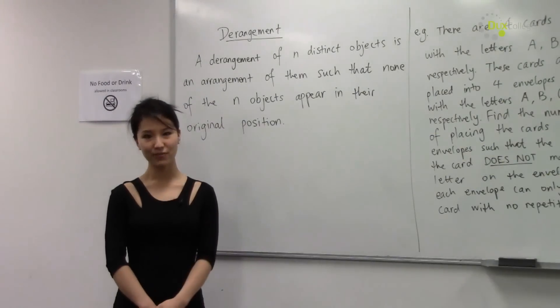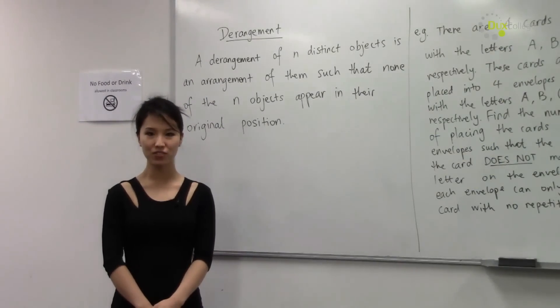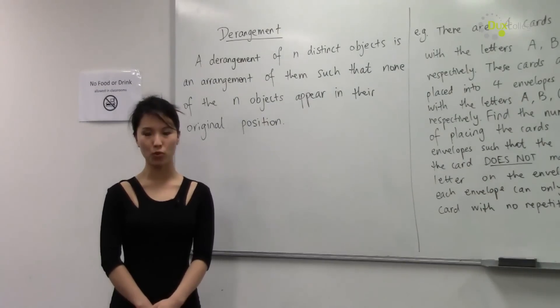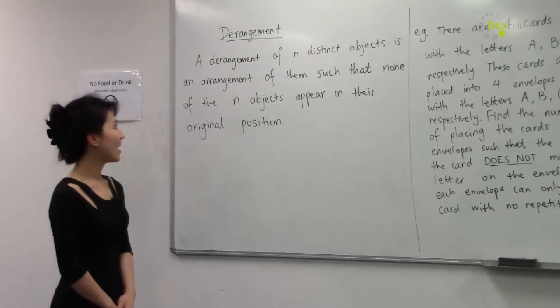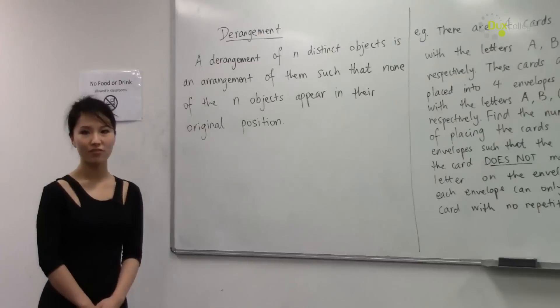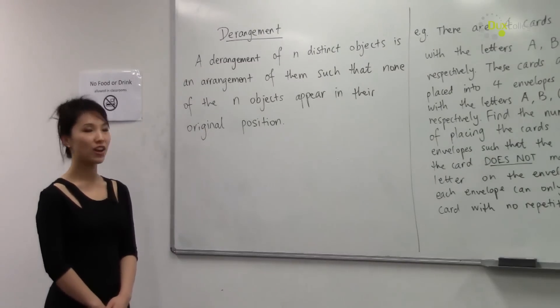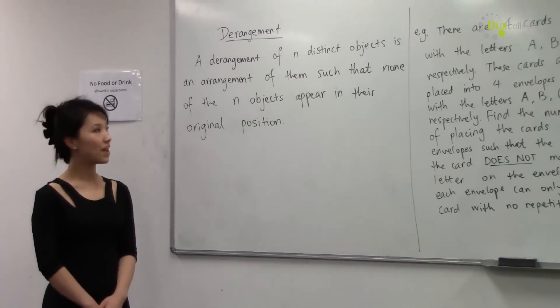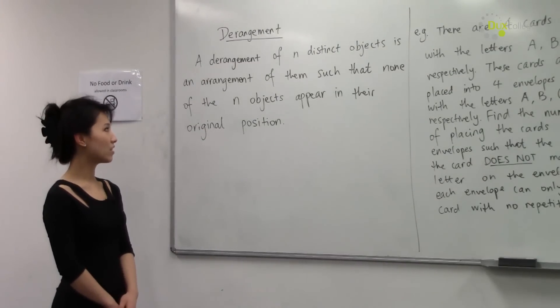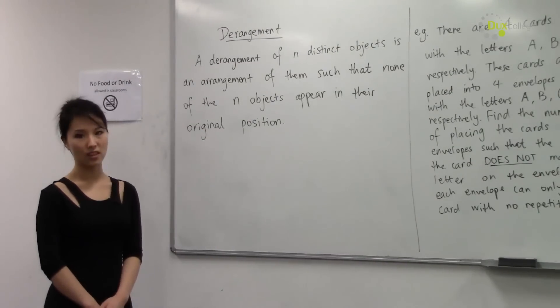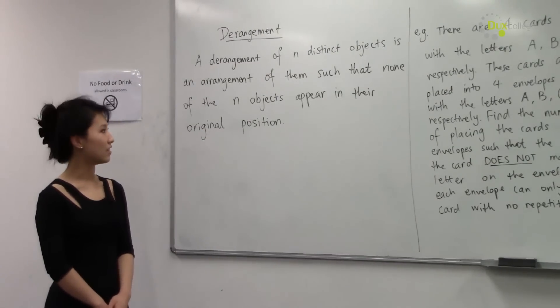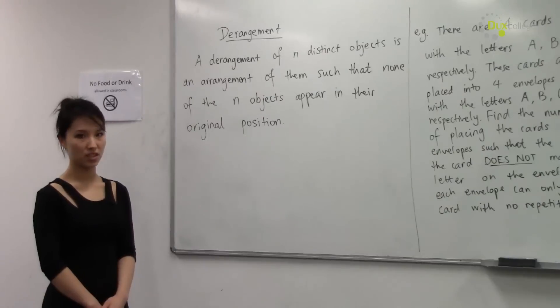In this video I will demonstrate a type of arrangement problem called a derangement. A derangement of n distinct objects is an arrangement of them such that none of the n objects appear in their original position.